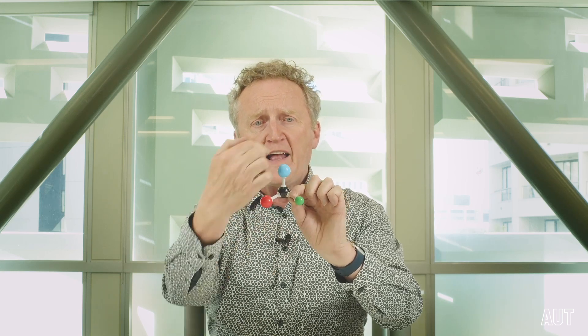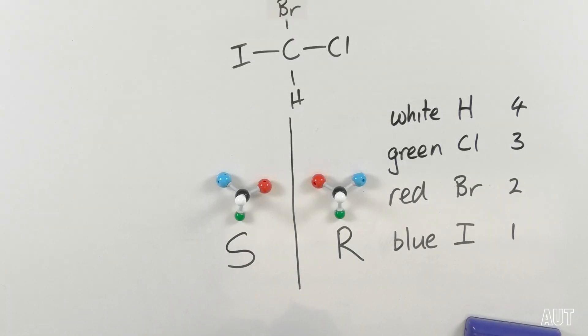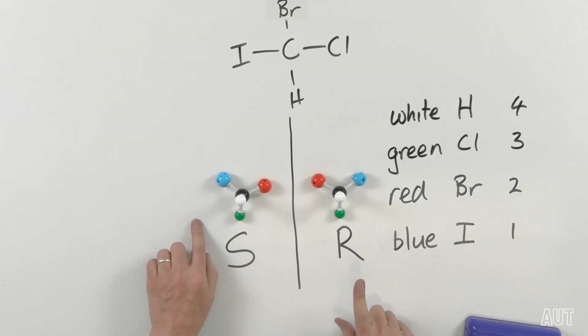The steps again: assign preferences, point the molecule so that the lowest preference atom is pointing away from you, then see whether you go clockwise — R — or anticlockwise — S — from highest to lowest preference of the remaining atoms. Now let's look at the enantiomer. We orient it so the hydrogen is pointing away from you. The top preference is iodine, then bromine, then chlorine. Going from highest to lowest, we go anticlockwise — and so that makes this an S isomer. That is how you name enantiomers: R enantiomer here, S enantiomer here.